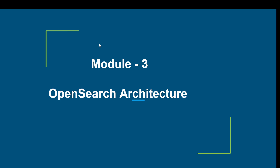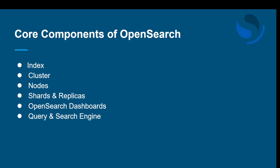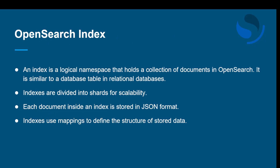Hello everyone, welcome back. Today we are going to start our new module on OpenSearch architecture. We will discuss in detail the various components of the architecture of OpenSearch. The core components listed are: index, cluster, nodes, shards, replicas, OpenSearch dashboards, and the query and search engine. Let's discuss each of these in detail.